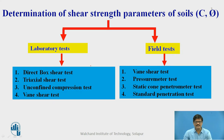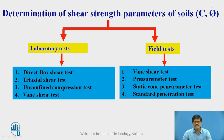As we are aware, there are many approaches of finding the strength parameters of the soil or even the shear strength of the soil. Some of the methods in the laboratory are: we can perform the direct box shear test, triaxial shear test, unconfined compression test, or vane shear test. Whereas on the field, we have methods like vane shear test, pressure meter test, static cone penetrometer test, and standard penetration test. Out of these, today we will discuss about the vane shear test.